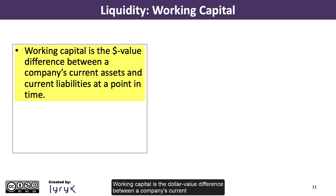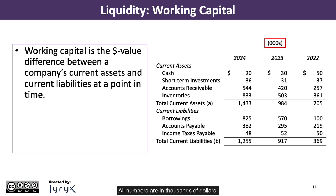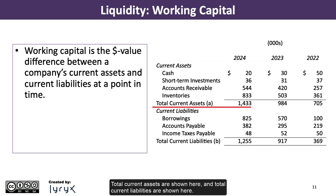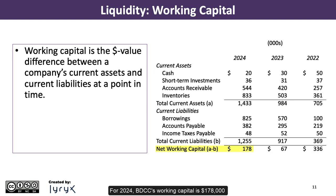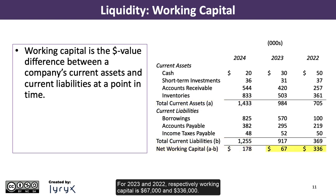Working capital is the dollar value difference between a company's current assets and current liabilities at a point in time. Here's the relevant information for Big Dog Car Works for the fiscal years ended 2022 through 2024 — all numbers are in thousands of dollars. For 2024, BDCC's working capital is $178,000, calculated as $1,433,000 in current assets less $1,255,000 in current liabilities. For 2023 and 2022 respectively, working capital is $67,000 and $336,000.